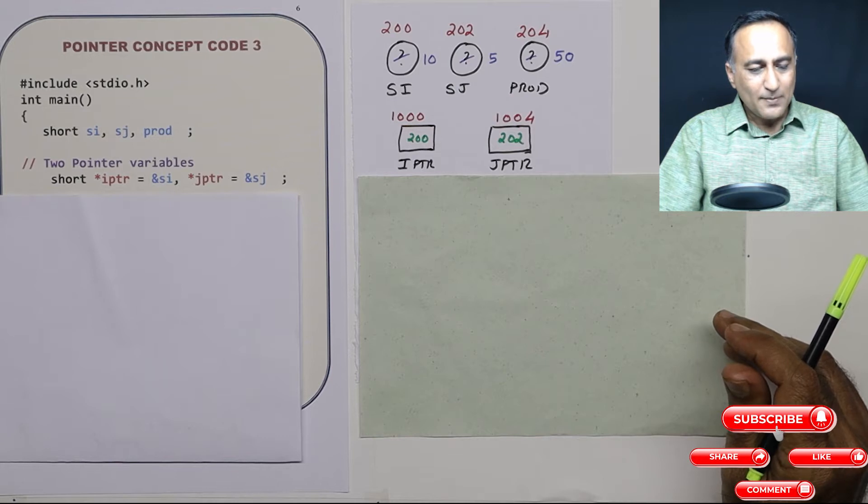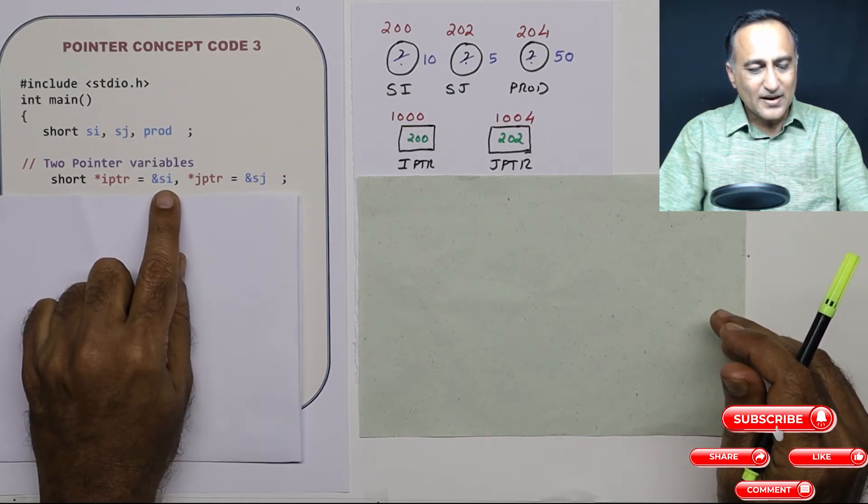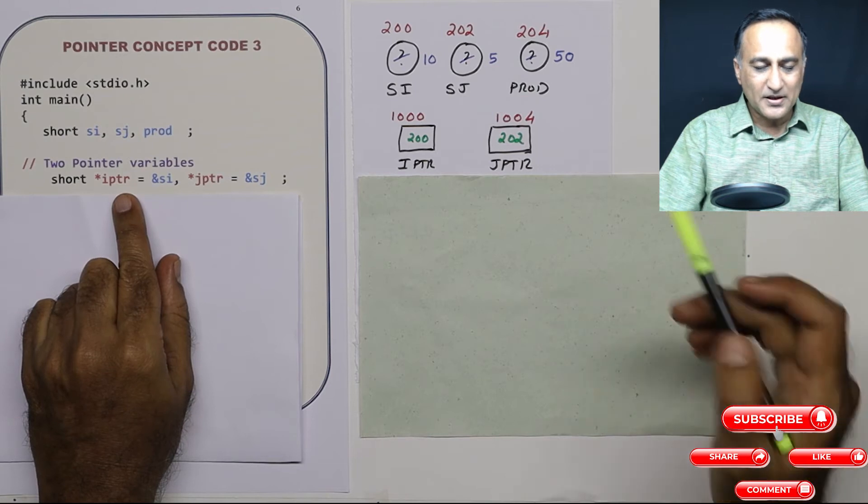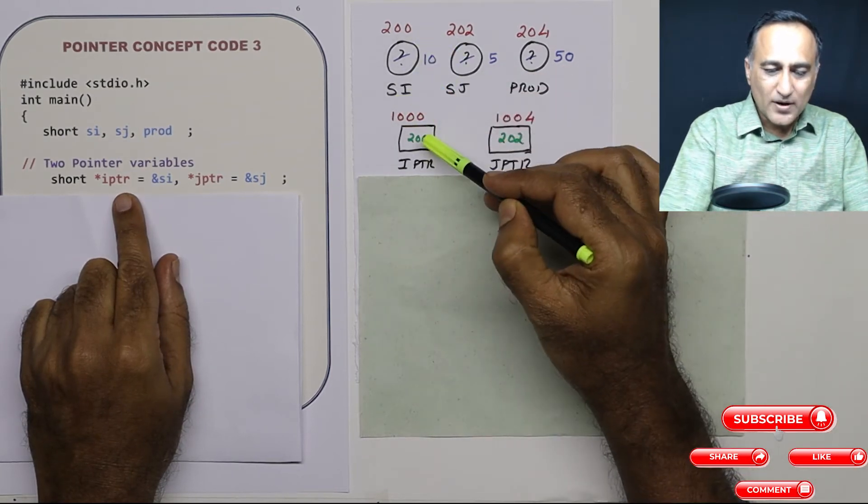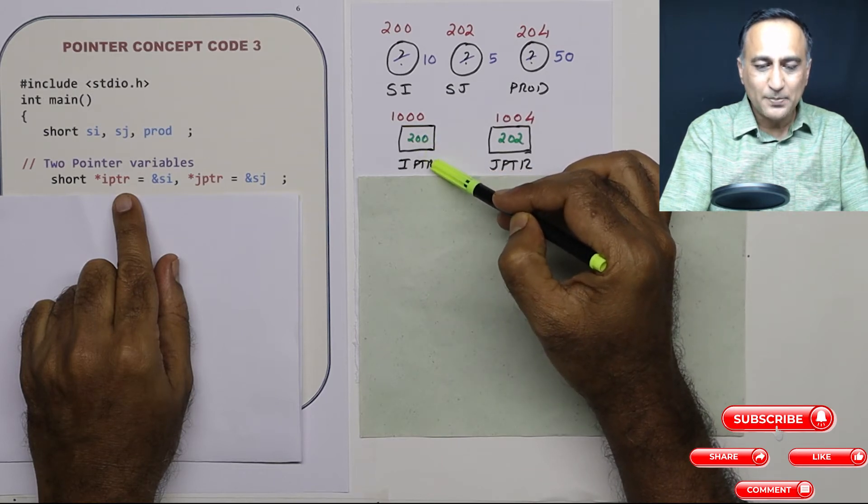Then what I am doing here is I am assigning the address of SI to IPTR. What is the address of SI? It is 200. So 200 is the value or contents of IPTR.